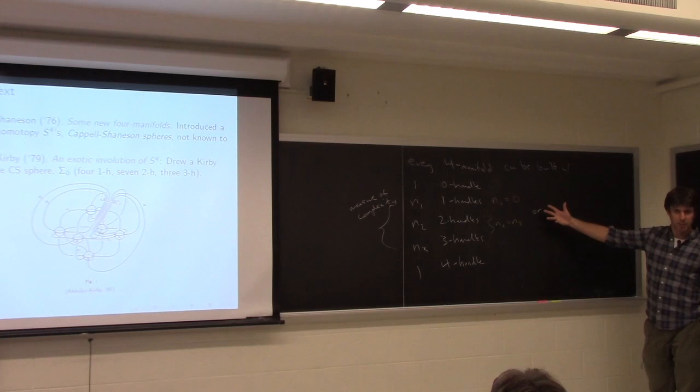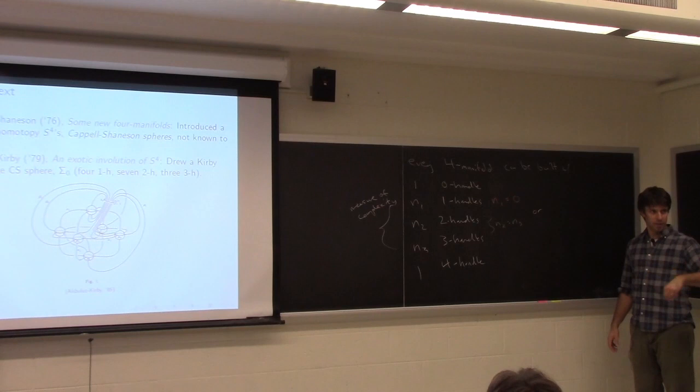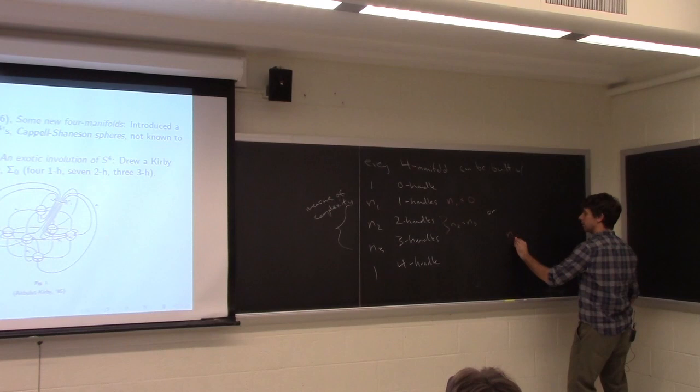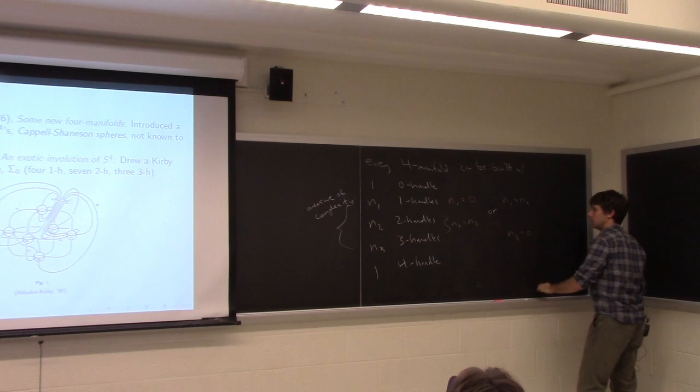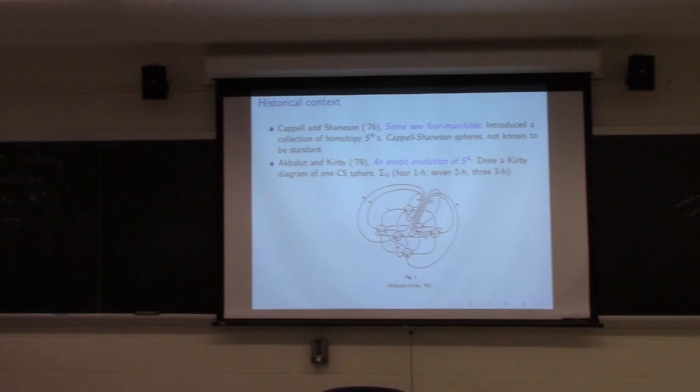You can always flip a handle decomposition upside down — you can think of these as coming from a Morse function and reversing the indices. So you can switch 0 to 4 handle, 1 and 3, and 2-handles become 2-handles when you flip. This particular picture has four one-handles, seven two-handles, and three three-handles.